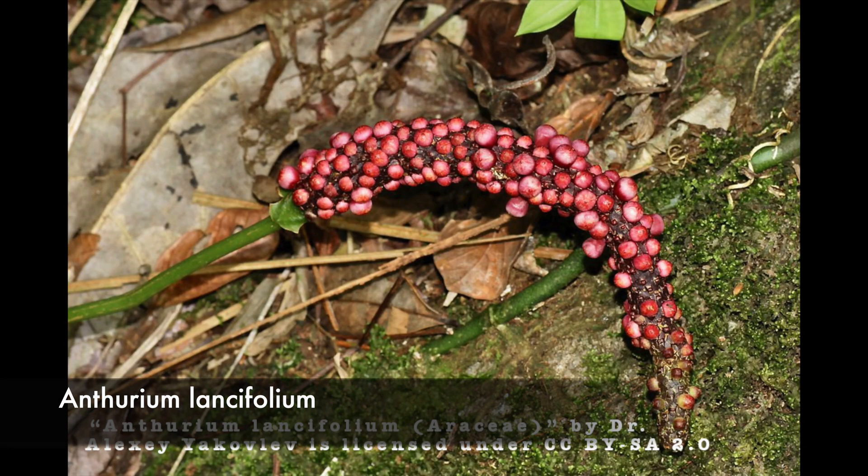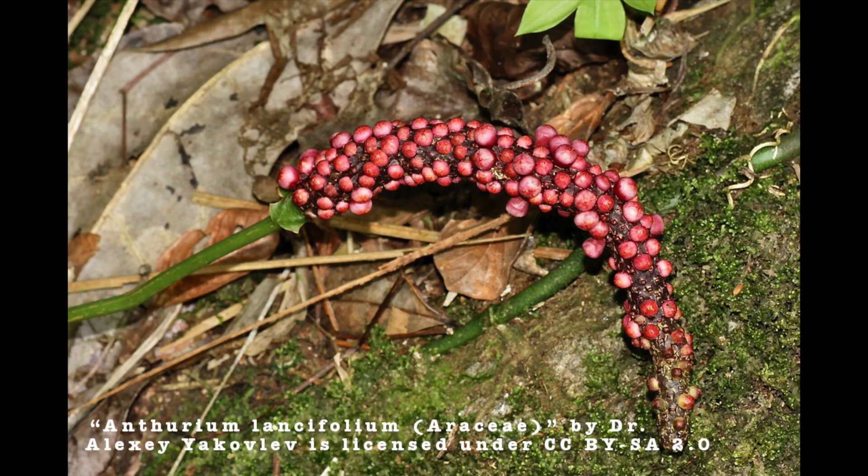Flies really like those carrion-smelling plants, and they're often attracted to anthuriums, which are also visited by beetles and weevils. Once the plants are pollinated, they produce berries with seeds in them, and other animals rely on these berries as food sources, which then helps the seeds spread to other locations — there they poop them out.